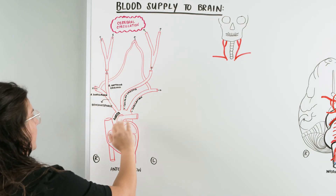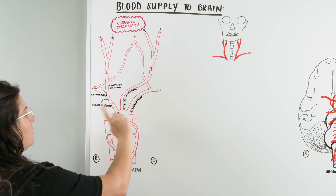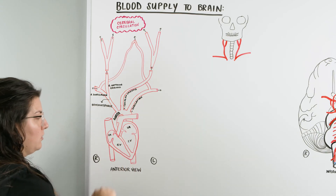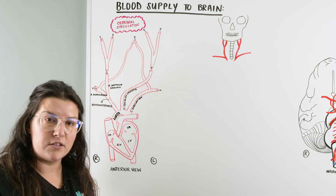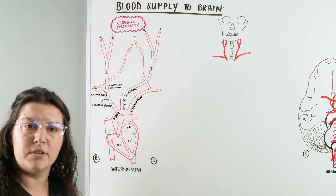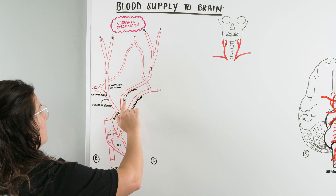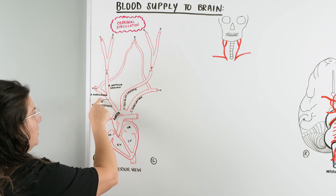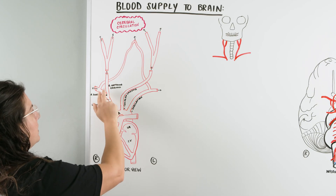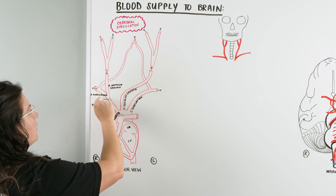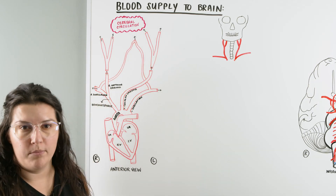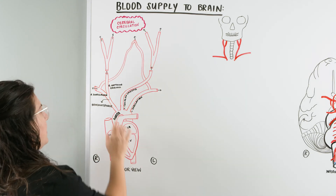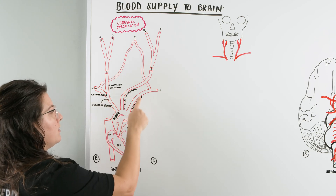The aorta has three branches that come off of it: the brachiocephalic artery, the left common carotid artery, and the left subclavian artery. Every vessel discussed in this video is going to be an artery, because that's how we deliver blood. The brachiocephalic artery then breaks off into the right subclavian artery and the right common carotid. So we have right subclavian, right common carotid, left common carotid, and left subclavian.